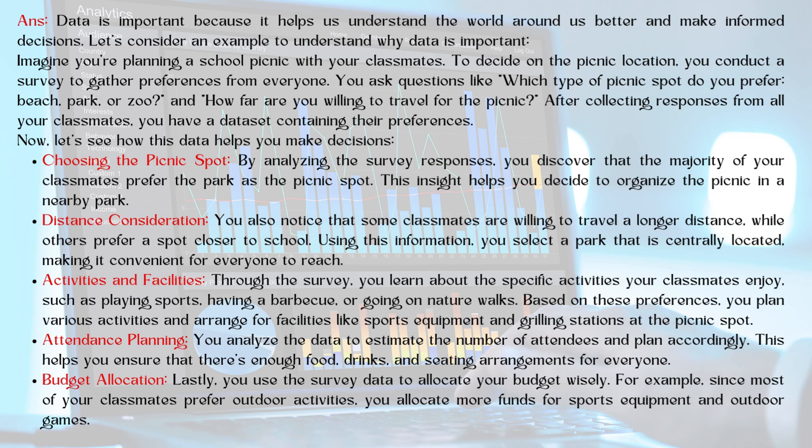Based on these preferences, you plan various activities and arrange for facilities like sports equipment and grilling stations. Attendance planning: you analyze the data to estimate the number of attendees and ensure there are enough food, drinks, and seating arrangements for everyone. Budget allocation: you use the survey data to allocate your budget wisely — for example, since most classmates prefer outdoor activities, you allocate more funds for sports equipment and outdoor games.